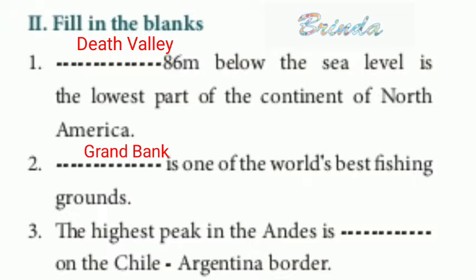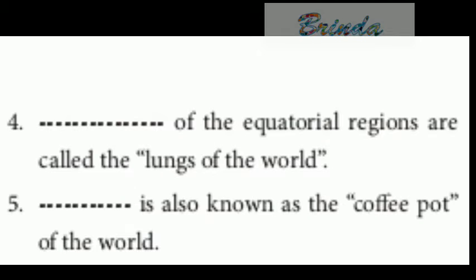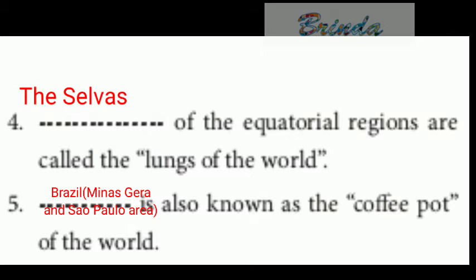Grand Bank is one of the world's best fishing grounds. Third: the highest peak in the Andes is dash, on the Chile-Argentina border. The answer is Mount Aconcagua. Fourth: the dash of the equatorial regions are called the lungs of the world. The answer is the Silvas. Fifth: dash is also known as the coffee pot of the world. The answer is Brazil — specifically the Minas Gerais and São Paulo area.